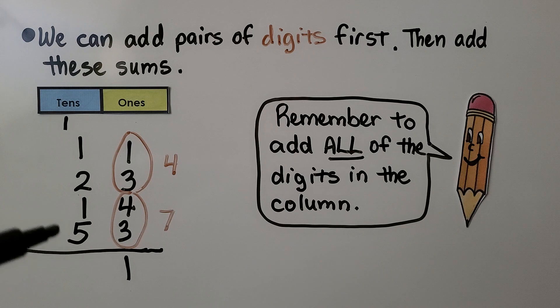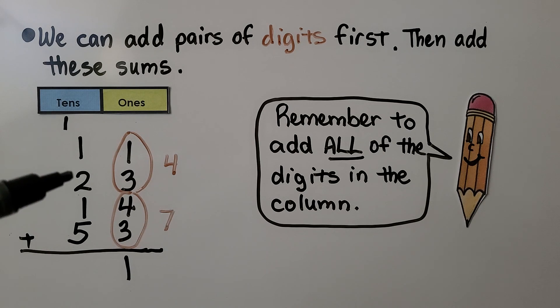11 is 1 ten and 1 one. Now we add the tens place. 5, 6, 7, 8, 9, 10. That's 101 for our sum.